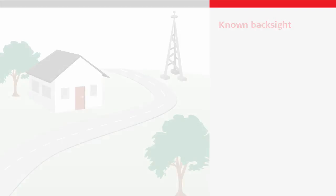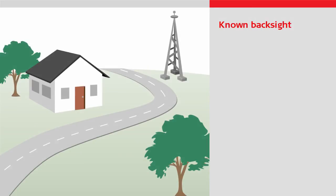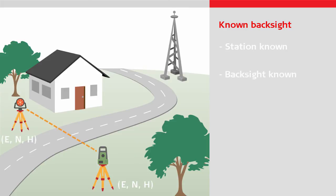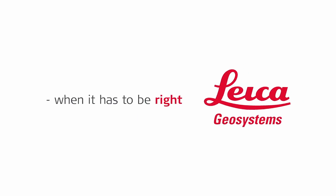In summary, the known backsite method is a simple method to use when you know the point over which you will position the total station, and you have a backsite point to which you know the coordinates. Please do watch the other videos to learn more about the individual methods, and thanks for watching.